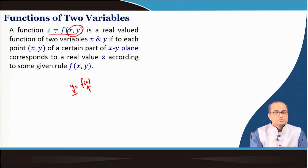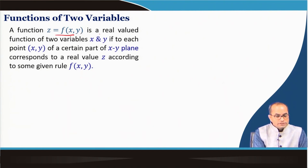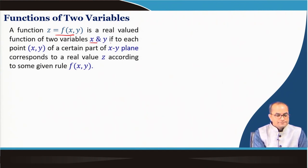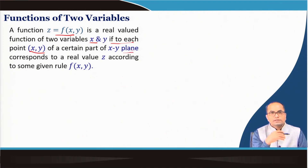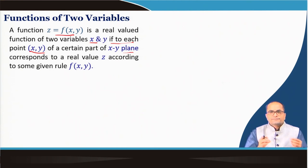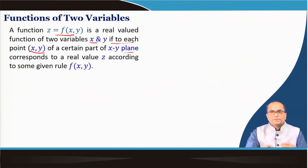Now we have two independent variables x and y, and we will denote that function as z equals f(x, y). This is a real-valued function — we will be talking about real-valued functions only, not complex-valued functions. A real-valued function of two variables x and y: if to each point (x, y) of a certain part of the xy-plane there corresponds a real value z according to some given rule, we have a function of two variables. We will have some domain in the xy-plane where the function picks points.